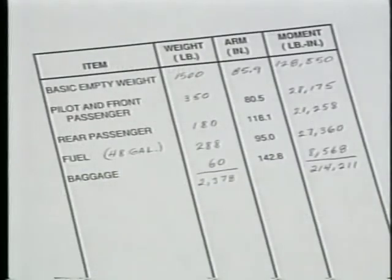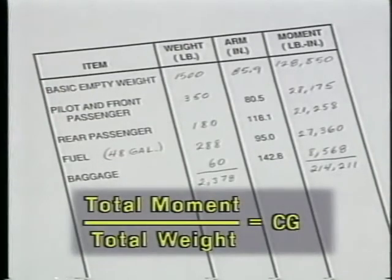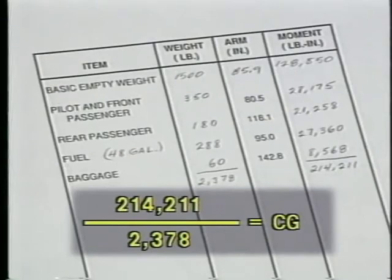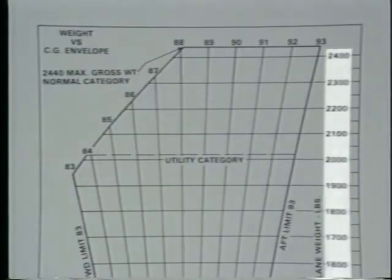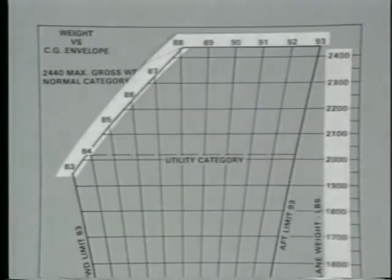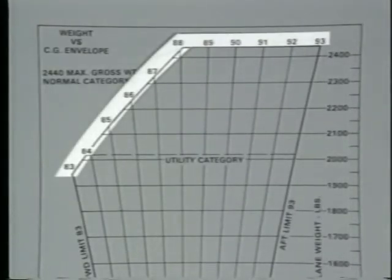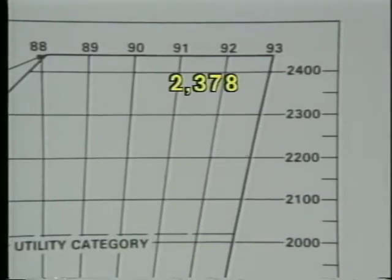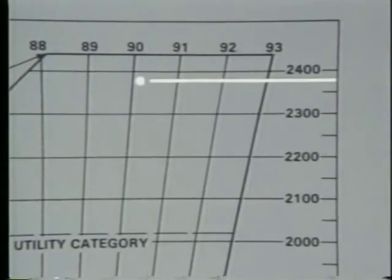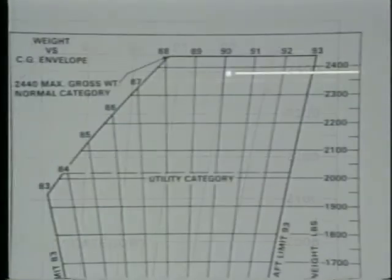You can now determine the center of gravity for your airplane by dividing the total moment by the total weight. The CG with this loading is located 90.1 inches aft of the datum. To determine if the CG is within limits, refer to the airplane's center of gravity limits graph. In this example, the numbers on the right represent the airplane's weight and the numbers on the top represent the CG location. Enter the graph on the right at 2,378 pounds, then move to a point just right of the 90-inch aft CG location. Since this point falls within the approved CG envelope, your airplane is properly loaded.